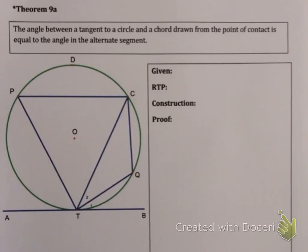Now the theorem sounds quite confusing. So let's read what it says. It says the angle between a tangent to a circle and a chord drawn from the point of contact.